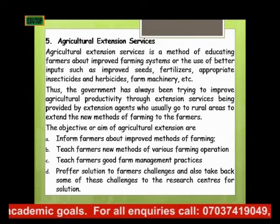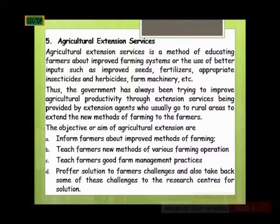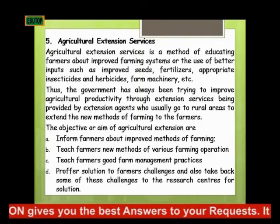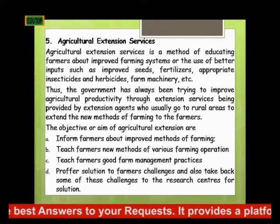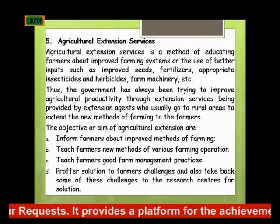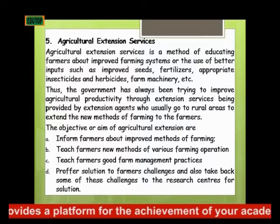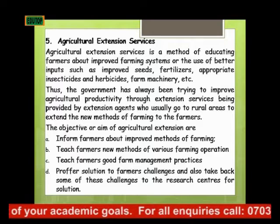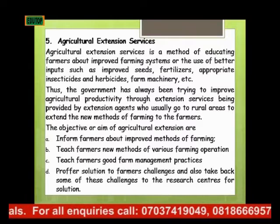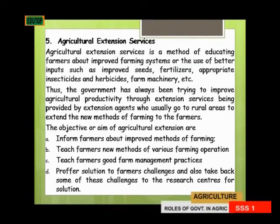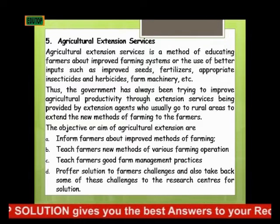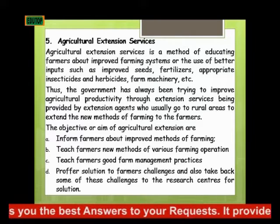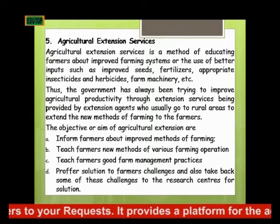The fifth role of the government in agricultural development is agricultural extension services. Agricultural extension services is a method of educating farmers about improved farming systems or the use of better inputs, such as improved seed, fertilizer, appropriate insecticide to use while storing produce, appropriate herbicide to use to control weeds, and also educating farmers on farm machinery. The government has always been trying to improve agricultural productivity through extension services provided by extension agents who go to rural areas to extend new methods of farming to the farmers.